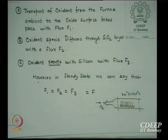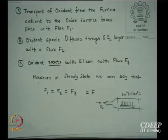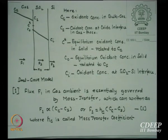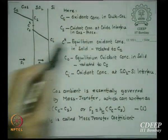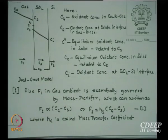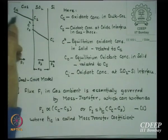Inside a furnace where temperature is kept between 800 and 1200°C, wafers are vertically stacked on a quartz rack, and oxygen enters and oxidizes the silicon. Now let us start with the model. Cg is the oxidant concentration in the gas stream inside the whole tube. Corresponding to Cg, we have the oxidant concentration at the oxide interface, which is Cs. There is a gradient from Cg to Cs because there is less oxidant near the surface.